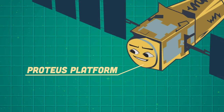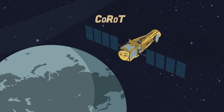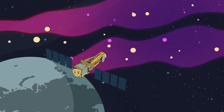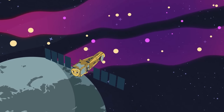My Proteus platform contains communication equipment, temperature and direction controls. On either side of me are my solar panels, which use the sun's radiation to power the satellite. From the CARO satellite, my mission was a delight — I was set out to bring rocky planets outside the solar system into sight.